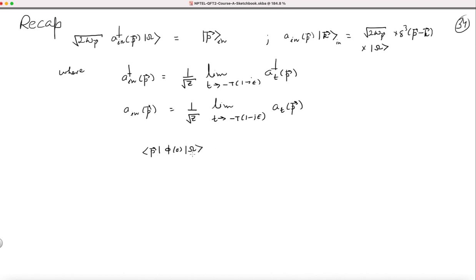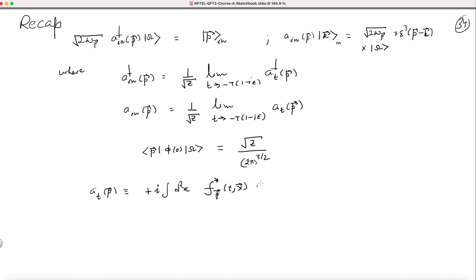Z is defined via the matrix element of phi between the vacuum and a single-particle state: this equals square root of Z with a factor of (2π)^(3/2) in the denominator. And a_t(p) was defined as an integral involving f_p, f_p(t,x) over d³x, with a_t†(p) being the corresponding expression with a time-reversed derivative.